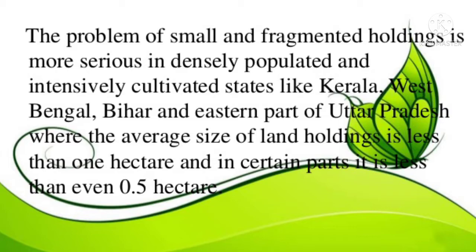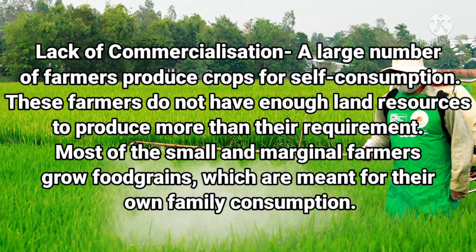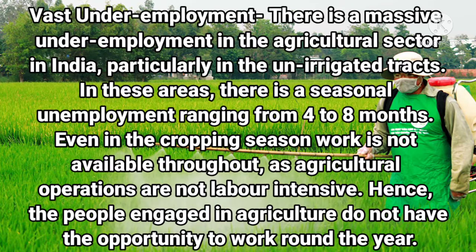The next point is about lack of commercialization in agricultural activity. A large number of farmers produce crops for self-consumption. These farmers do not have enough land resources to produce more than their requirement, which comes under subsistence farming. Most small and marginal farmers grow food grains meant for their own family consumption, so the commercialization of farming is very less in our country.